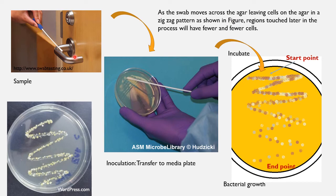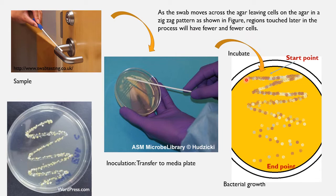Take a swab sample from a normal doorknob. You use that swab — which now contains your sample — for inoculation in a zigzag pattern. As the swab moves across the agar, cells from the swab are transferred and deposited onto the agar plate in a zigzag pattern. Regions which are touched later in the process will have fewer and fewer cells. The first streak region will have the highest growth or aggregated colonies.